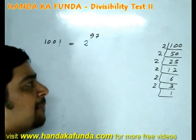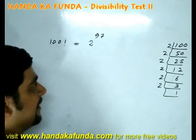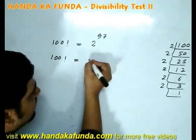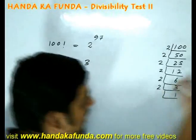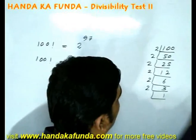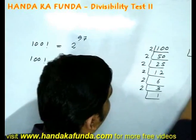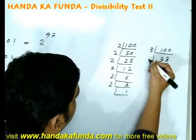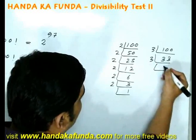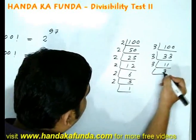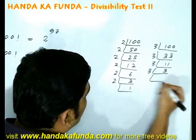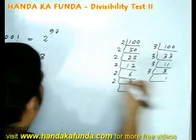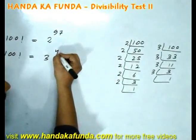What will be the highest power of 3 in 100 factorial? We divide by 3 repeatedly: we get 33, then 11, then 3, then 1. That is 33 plus 11 plus 3 plus 1, which equals 48.